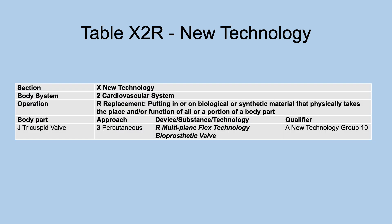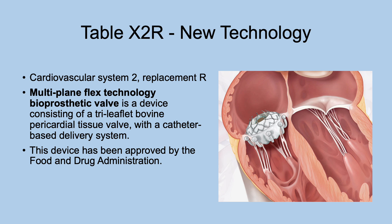Also in X2R replacement: a tricuspid valve with a new device — multi-plane flex technology bioprosthetic valve. This is a device consisting of a tri-leaflet bovine pericardial tissue valve with a catheter-based delivery system. This device has been approved by the FDA.